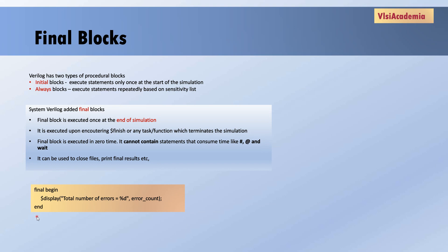Final blocks can be used to print final results or to close files. Here is an example: at the end of simulation we may want to check the error count. In this final block, using the final keyword, I am displaying the error count using dollar-display. So at the end of simulation, whenever dollar-finish or a task which terminates simulation is encountered, this final block will print our final error count. That's all for final blocks.